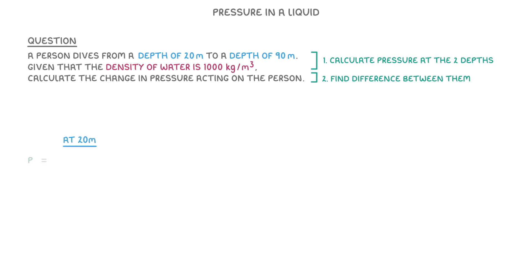At 20 meters, the pressure would be 20 meters times the density of 1000, times 9.8, which is the gravitational field strength here on Earth. This gives us 196,000 pascals.